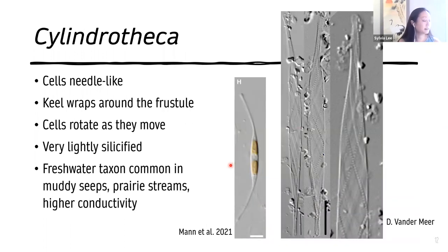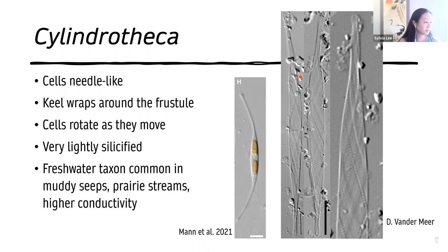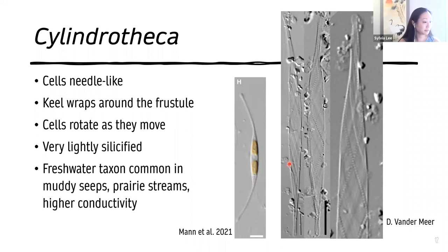Next we have Cylindrotheca. These frustules are very needle-like. What's interesting about this genus is that the keel wraps around the frustule, allowing this diatom to rotate as they move through soils, muddy seeps, and prairie streams. They're often missed in light microscopes because of the cleaning process and the fact that these cells are very lightly silicified, so usual processing will often break up these lightly silicified frustules.